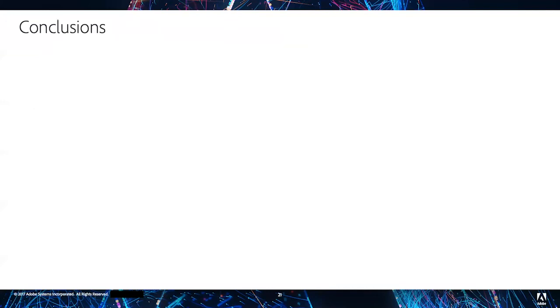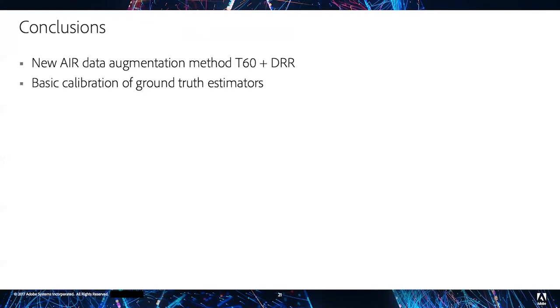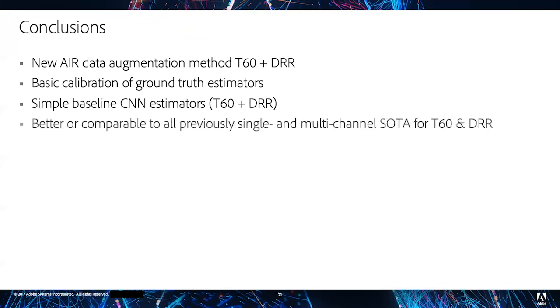For some conclusions, we propose a new impulse response data augmentation method for T60 and DRR. We have a basic calibration for ground truth estimators to help improve benchmarking. We have a simple baseline CNN estimator. This estimator is better or comparable to all previously published single or multi-channel state-of-the-art methods as compared on the ACE challenge test set benchmarking. The method is approximately five times faster than previous methods.